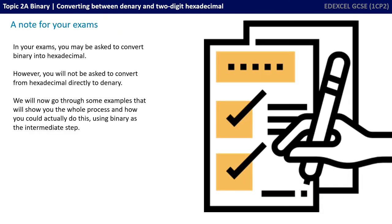Before we move on, a quick note about your exams. You may be asked to convert from binary to hexadecimal. However, you're not going to be asked to convert directly from hexadecimal to denary. We're going to go through some examples of that process though, to show you how to actually do it using binary as an intermediate step, and hopefully it will make you feel more comfortable with the whole number conversion process.